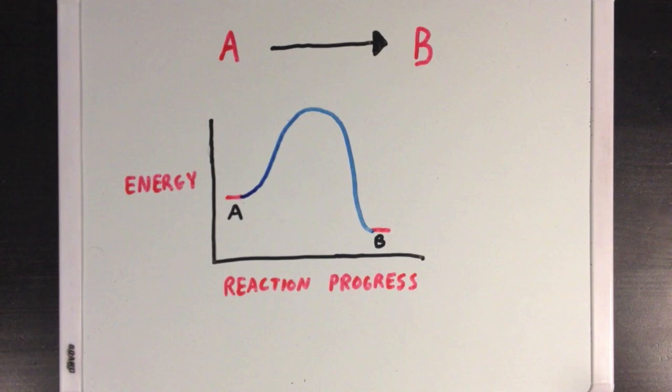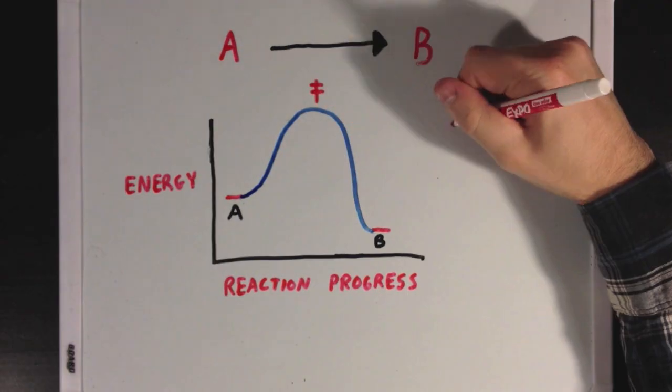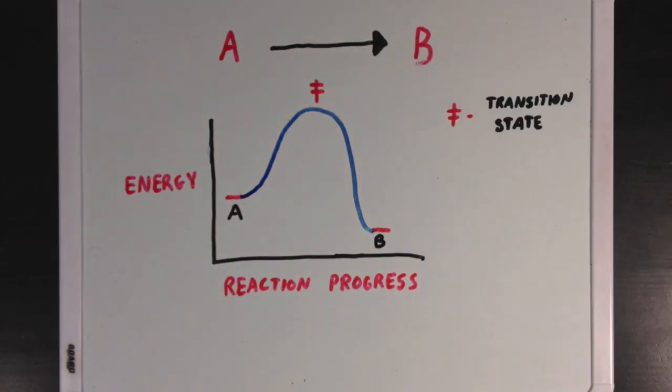So, looking at this graph, you'll notice that the energy of molecule A will rise up pretty high, and then drop all the way down to the energy of molecule B. And we can actually define a couple of values from this graph. The transition state of a reaction, which is represented by this double dagger symbol, is the highest energy point on the path from A to B. And it's where you'll find the most instability throughout the entire reaction.